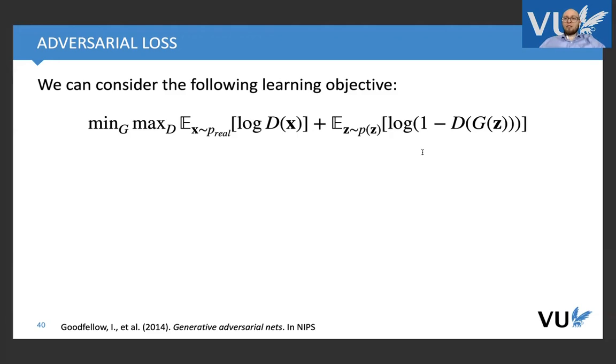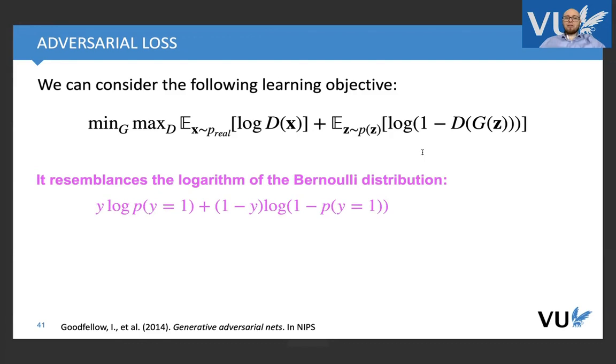We can do that by considering the following learning objective. This learning objective states the min-max problem. If we have real data, we consider log of the discriminator. But if we have fake data, we consider log of one minus discriminator for fake image. You can ask, why is this so? The answer is very simple. This resembles the logarithm of the Bernoulli distribution. You can think about it from the expert discriminator perspective, whether I will get data that is zero, fake, or one that is real. This is exactly like learning Bernoulli distribution.